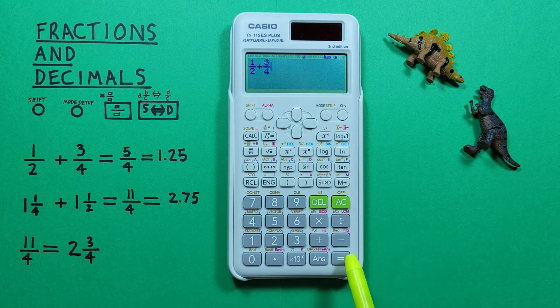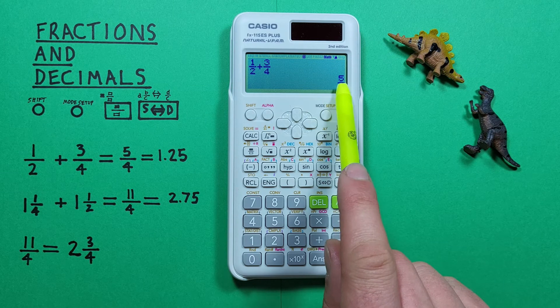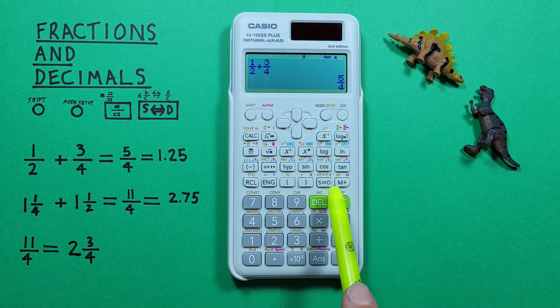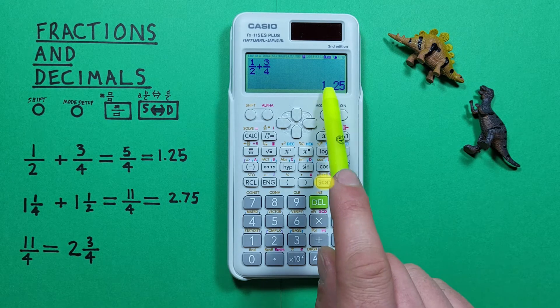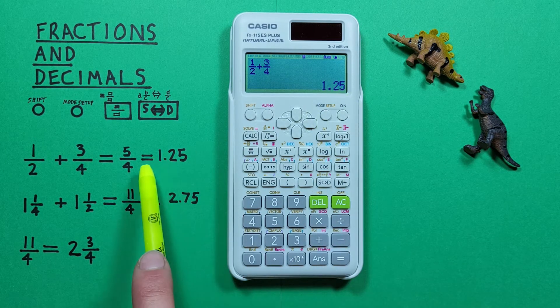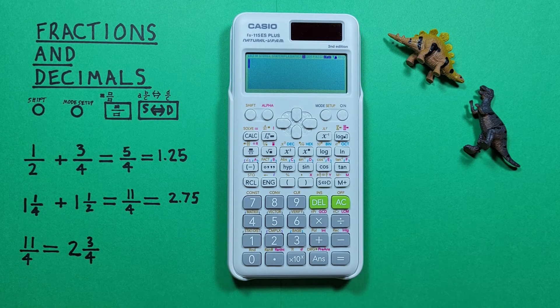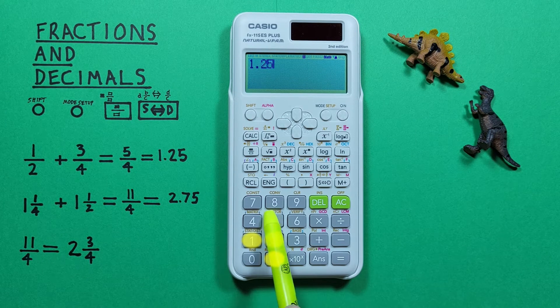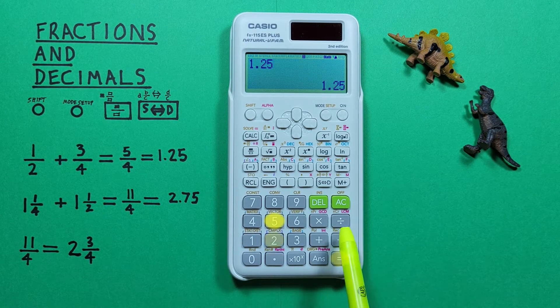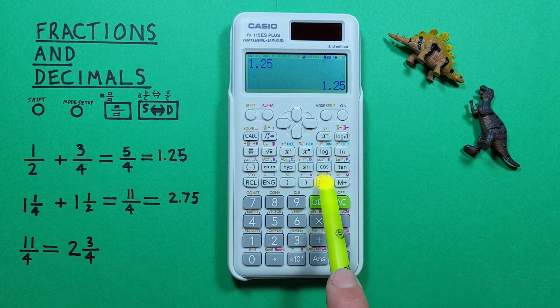And we press equals. And we see this gives us 5 over 4, which again we can convert to decimals with the S to D key and get 1.25. Alternatively, if we enter 1.25 and press the S to D key, we see we can convert it to the 5 over 4 and back.